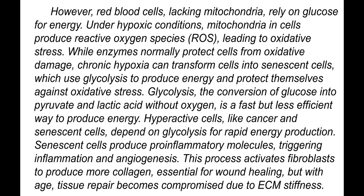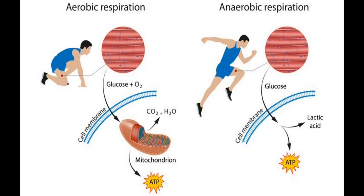Glycolysis — the conversion of glucose into pyruvate and lactic acid without oxygen — is a fast but less efficient way to produce energy. Hyperactive cells like cancer cells, senescent cells, and cells infected by viruses depend on glycolysis for rapid energy production. Senescent cells also produce pro-inflammatory molecules triggering inflammation and angiogenesis, which activates fibroblasts to produce more collagen, essential for wound healing. But with age, tissue repair becomes compromised due to extracellular matrix stiffening.